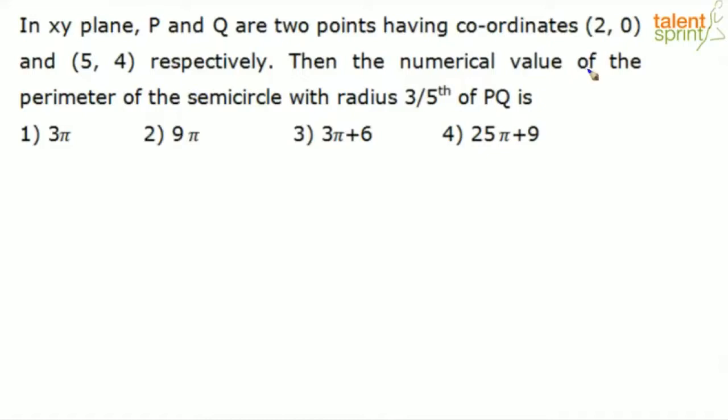Then the numerical value of the perimeter of the semicircle with the radius 3/5 of PQ is dash. The given options are 3π, 9π, 3π+6, and 25π+9.